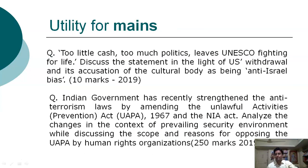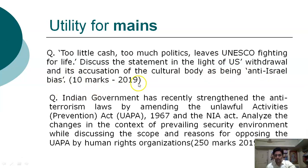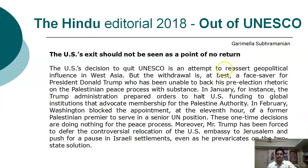Ab articles to padhne hain, lekin pehle hum unki utility samjhenge — ki UPSC mains ke andar jo questions aate hain unke liye articles ki utility kya hai. Ise samajhne ke liye hum do questions study karenge. Pehla question hai: 'Too little cash, too much politics, leaves UNESCO fighting for life.' Discuss the statement in light of the US withdrawal and its accusation of the cultural body as being anti-Israel bias. Yeh question UPSC mains 2019 mein 10 marks ke liye aaya tha. Yahan par UNESCO ke baare mein charcha ki gayi hai aur USA ne jo UNESCO se withdrawal kiya, uske baad jo blame game start ki, uske baare mein bataya gaya hai. Is poore issue ke baare mein Hindu mein article aa chuka tha.